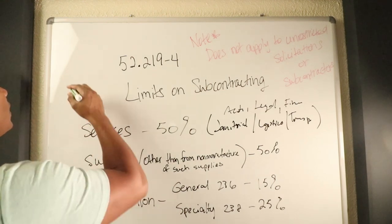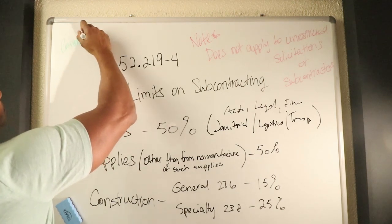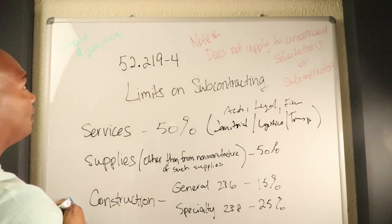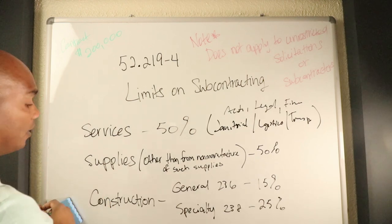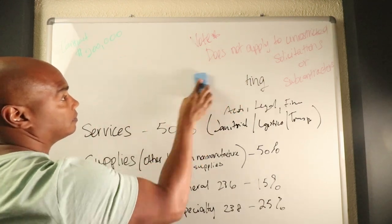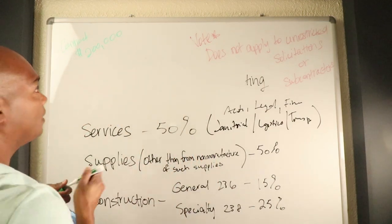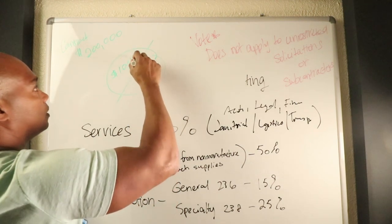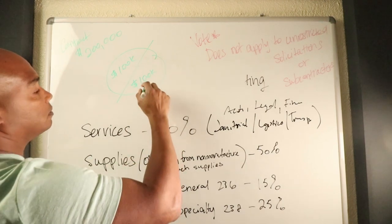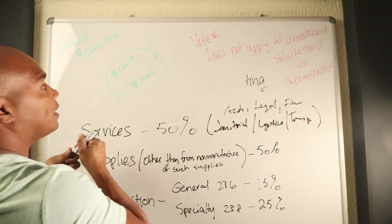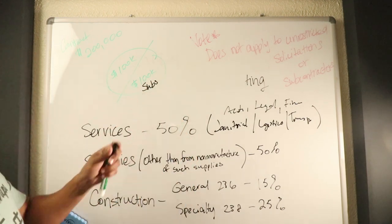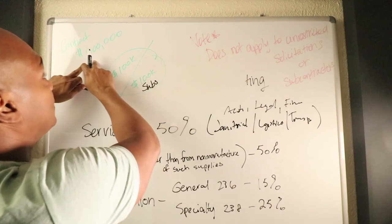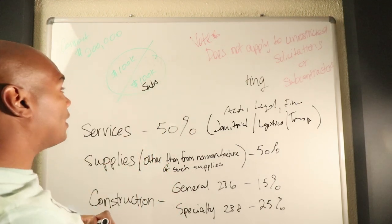Eric, what does this mean? How do I look at this stuff? The way that you look at this is essentially if you get a contract, let's say $200,000, and it's a service contract, a janitorial contract. If you get a contract for $200,000 janitorial, you cannot award more than $100,000 of that contract to subcontractors.